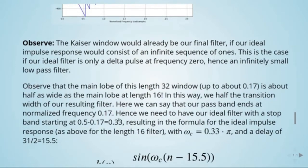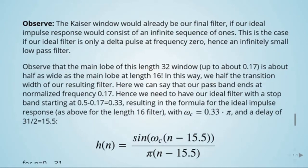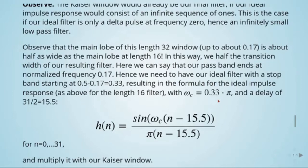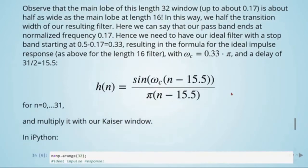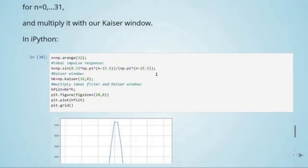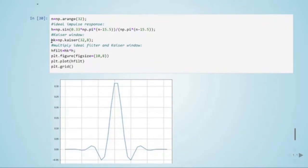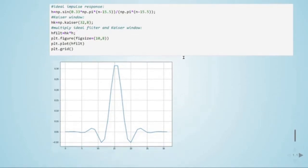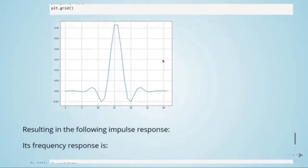Hence we need to have our ideal filter with a stop band starting at 0.5, our desired cutoff frequency, minus 0.17, which is the end of the pass band from the Kaiser window, so it equals 0.33. This results in the formula for the ideal impulse response, now using length 32, so we have 15.5, and we need omega_c = 0.33 pi, and then we multiply it with the Kaiser window. In Python, we have our ideal impulse response with 0.33 pi calculated before, and our Kaiser window with length equals 32 and beta equals 8.